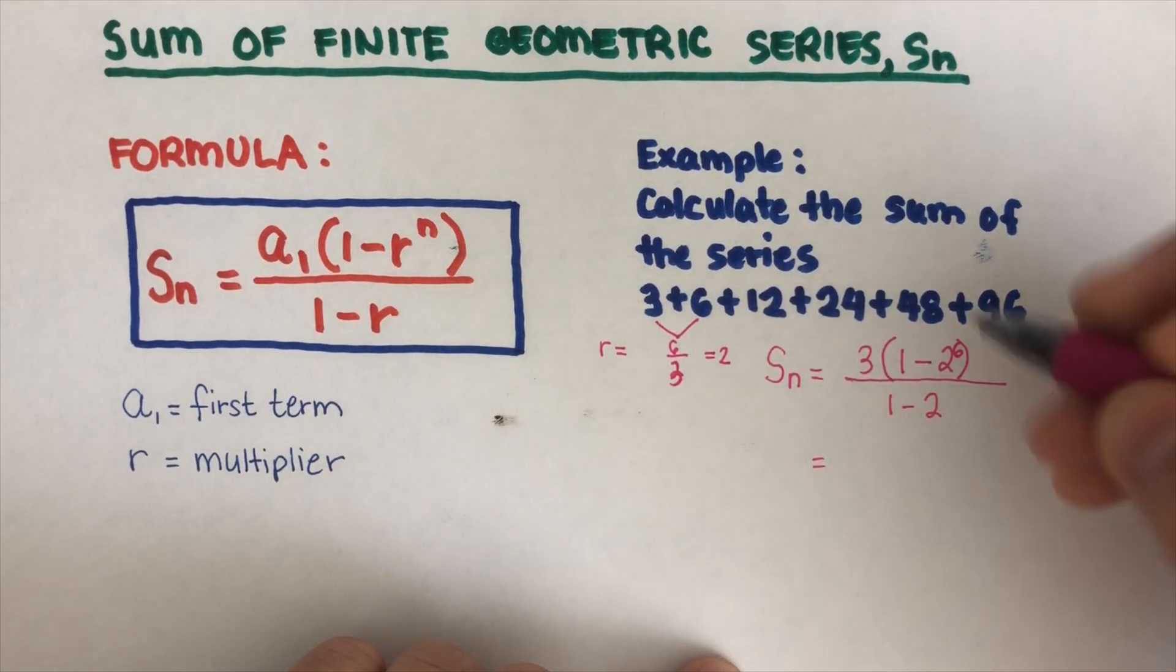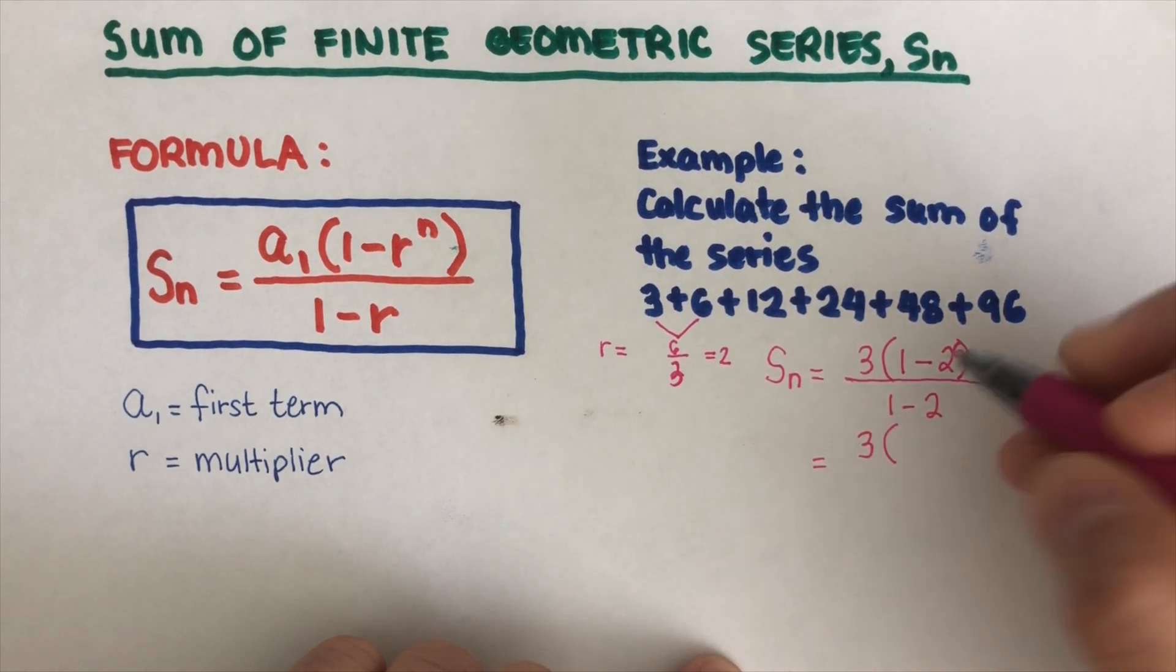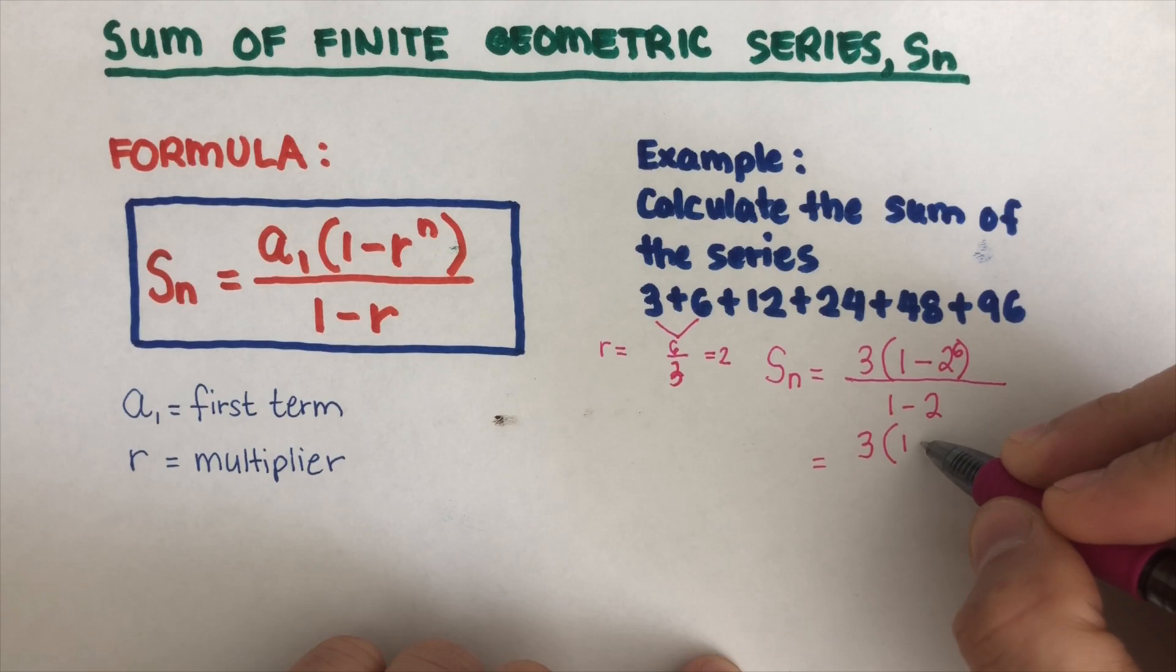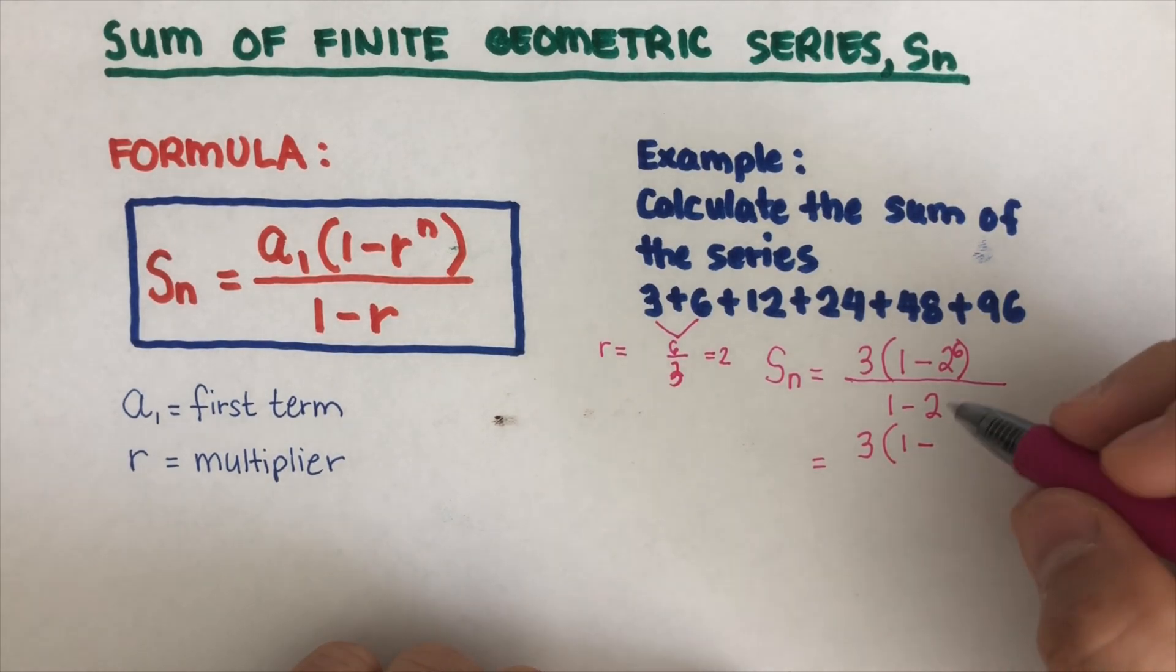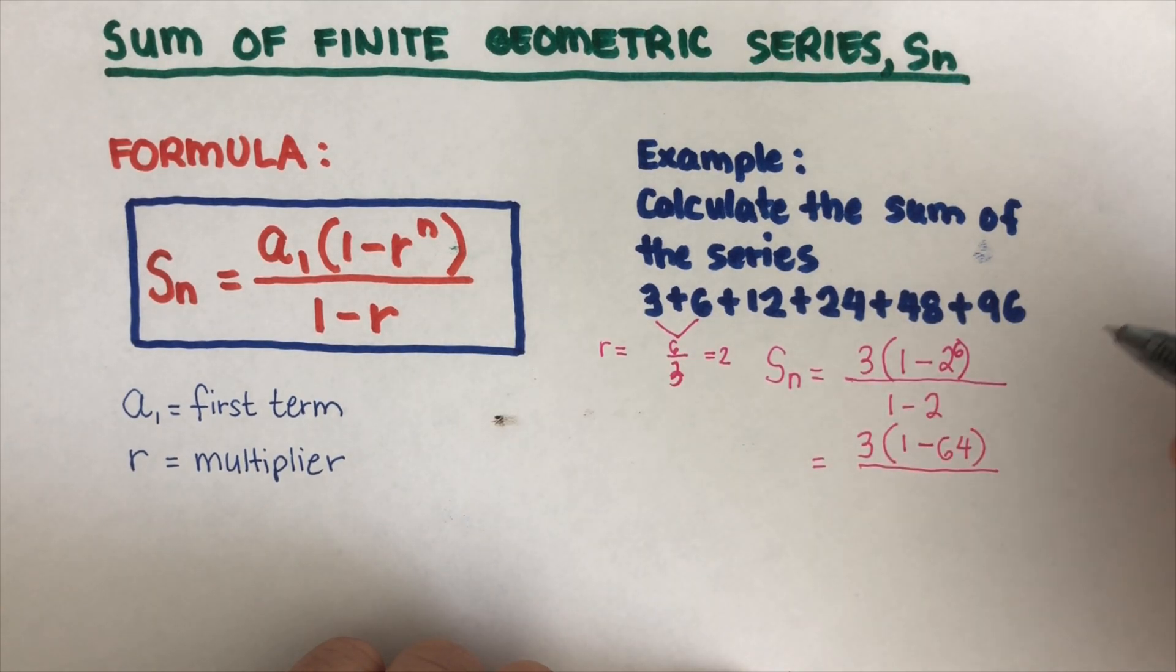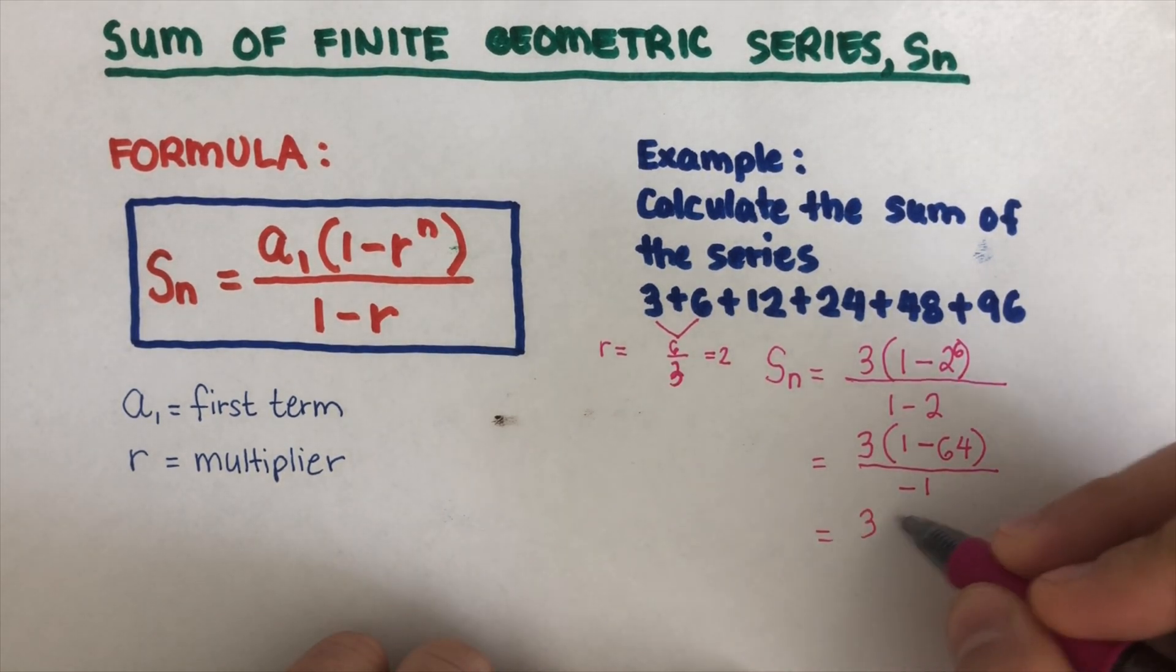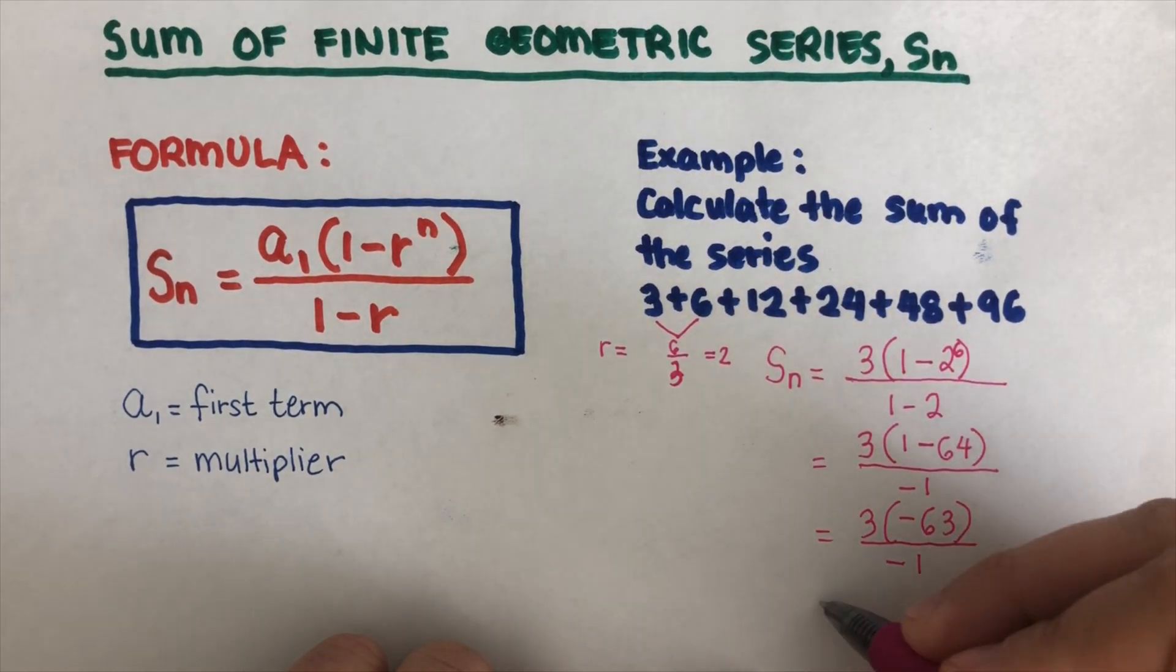So 3 times 1 minus 2 to the power 6 is 64, divided by 1 minus 2 is negative 1. So this becomes 3 times negative 63 divided by negative 1. And so if we do the math for this on the calculator, it should come out 189.